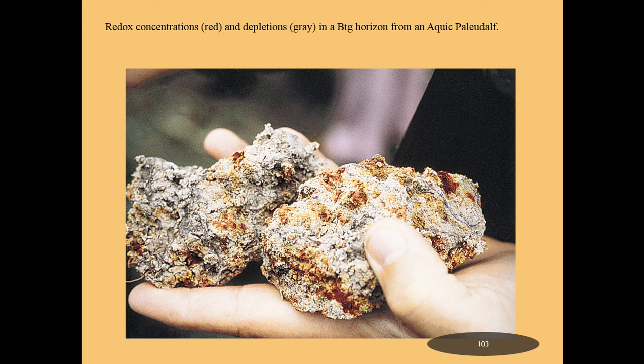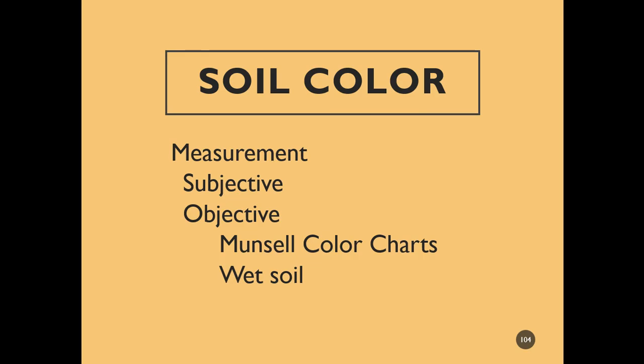If you ever have your soil tested for a septic system, they are looking for depth-to-water table. That is determined by color — the seasonal water table in the Midwest can be much higher than maybe if you're testing in August. The water table would be much lower than if you were testing in April. And so that seasonal wetness is shown in the redox and depletion concentrations of the soil profile.